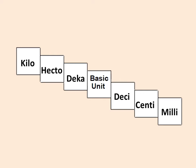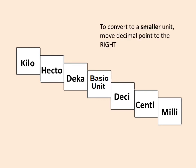Once you're able to identify the bigger units from the smaller ones, conversion will be fairly easy. To perform conversion, remember these two things: to convert to a smaller unit, move the decimal point to the right; and to convert to a larger unit, move the decimal point to the left.